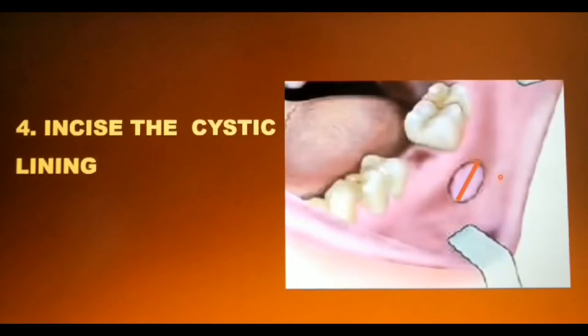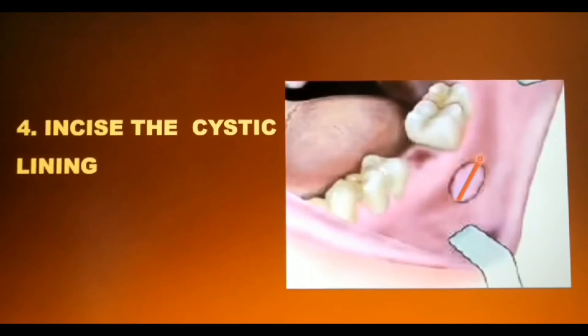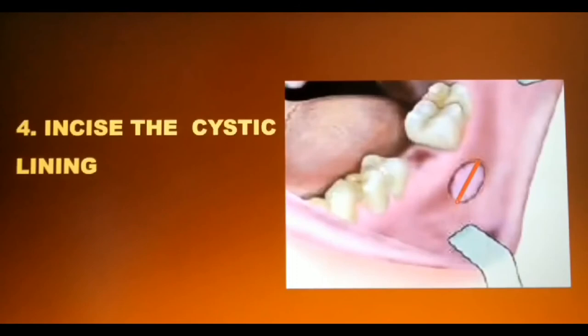After removing the bone enclosing the cystic lining, the lining is exposed. Next, a stab incision or cross incision is given in the lining to expose the cystic lumen. Once the stab incision is made, the lining bursts like a balloon and all the contents flow out. The cystic contents are then evacuated using pressure suction. Remember, you are not scraping off the entire lining from the bone — you stab into the lining to rupture it and gain access into the lumen.